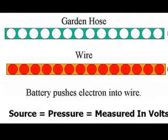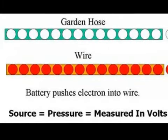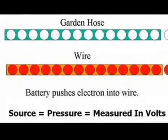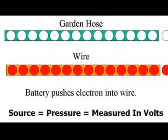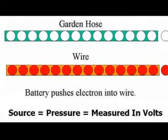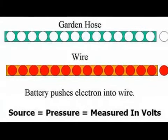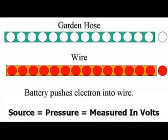When we hook up our source, we push an electron into one end. We have a domino effect of electrons, and then one electron tries to come out the other end and goes back to the source.